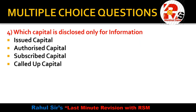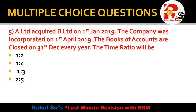Next question: which capital is disclosed only for information? In the balance sheet, under the share capital heading, we disclose various types of capital. The key point to remember is that authorized capital is the one which we present only for information purposes. The right answer for this question is authorized capital.